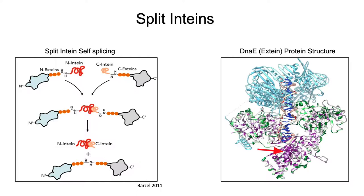I'd like to talk more about the split intine, particularly the DNA-E split intine in cyanobacteria. On the left we see an image demonstrating in more depth how the N-terminal and C-terminal of the host extines and intine join together, and then the intine excises itself. This is a complex process, and so it makes one think what benefit this would have to an organism — and that is some quite active discussion right now in the field. It's not quite clear if these intines have a functional role or not.